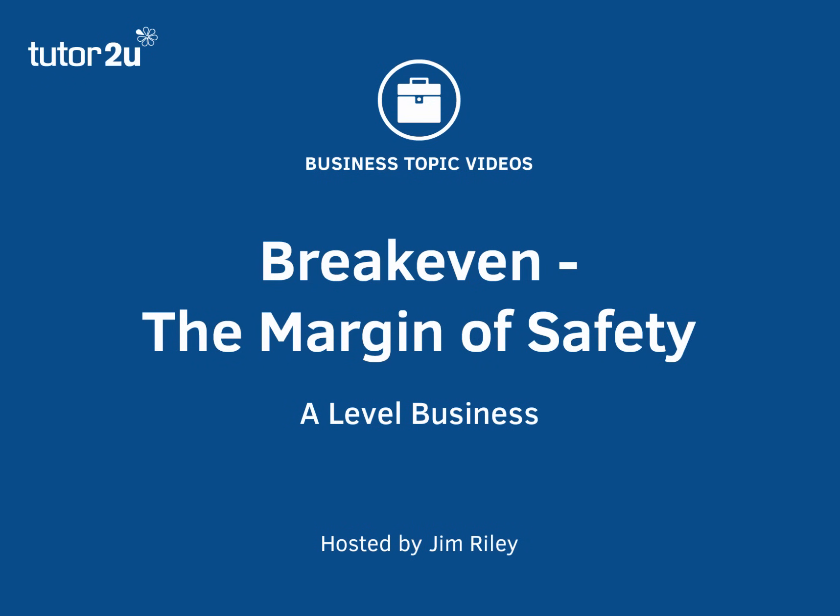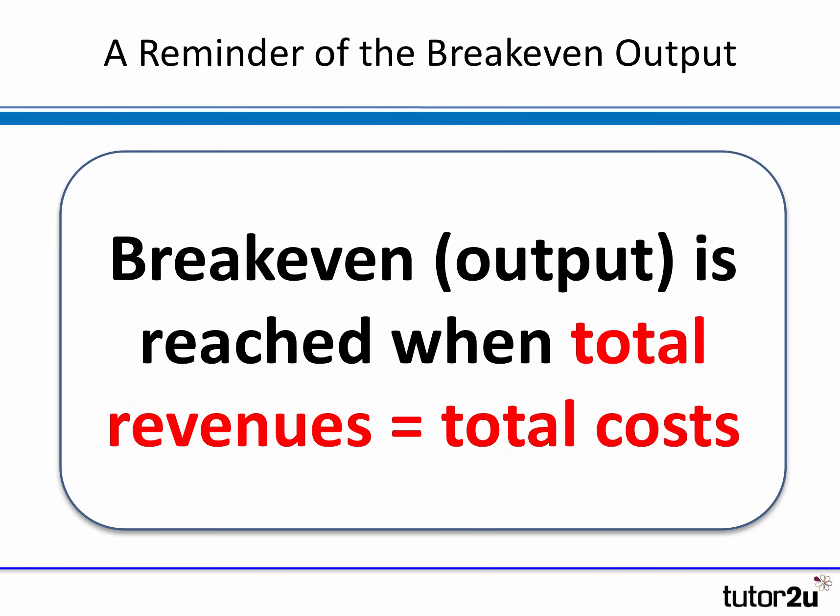In this business topic video we're going to take a look at a specific aspect of break-even analysis that's really useful, particularly if you want to use break-even calculations to work out the profit of a business. This concept is called the margin of safety. A quick reminder — hopefully this is familiar — of how we calculate the break-even output: the number of units at which total revenues equals total costs, the point at which a business is not making a loss but neither is it making a profit.